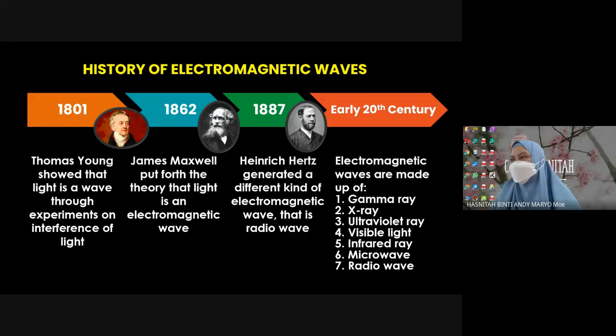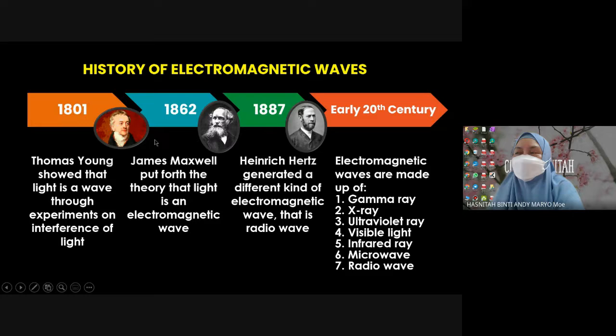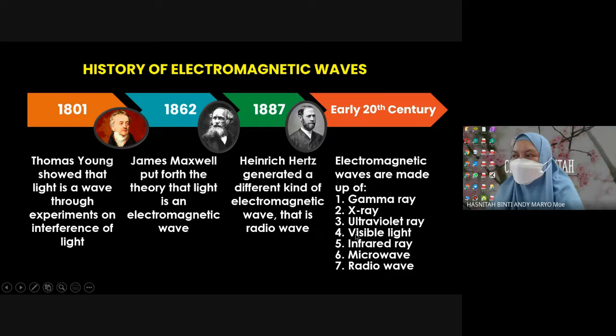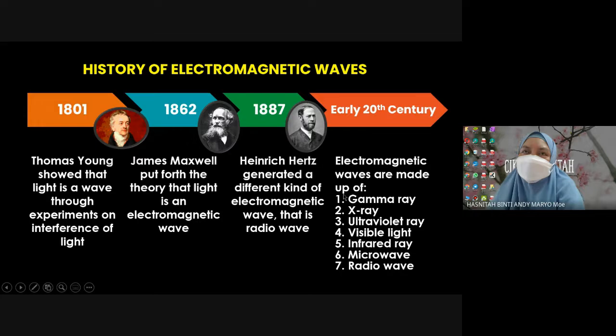In the early 20th century, other scientists and physicists discovered that electromagnetic waves are made of seven spectrum components: gamma ray, x-ray, ultraviolet ray, visible light, infrared, microwave, and radio wave. If you talk about electromagnetic waves, these are the seven spectrum of electromagnetic waves, starting from gamma ray until radio wave.